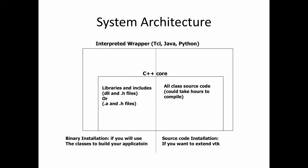On top of the C++ core of VTK, there are interpreted language wrappers. The languages supported right now include Tcl, Java, and Python. To use VTK with the wrappers, you need to have installed the Tcl/TK shell, Java, or a Python interpreter. The wrappers are included in the VTK installation package. If you want to extend the VTK wrappers, you'll need the Tcl/TK source, a Java SDK, or Python source.